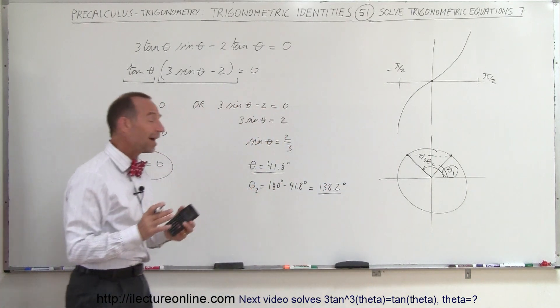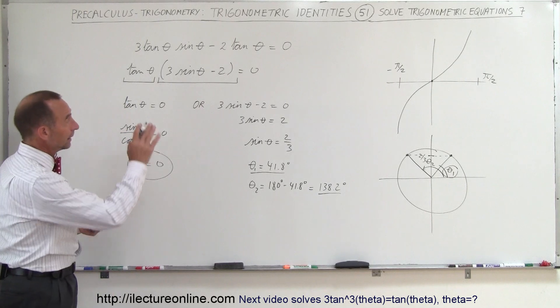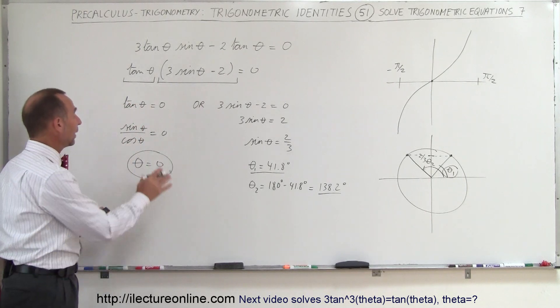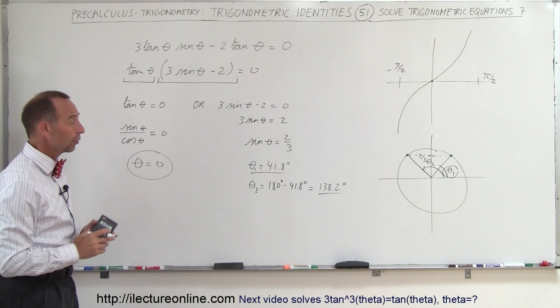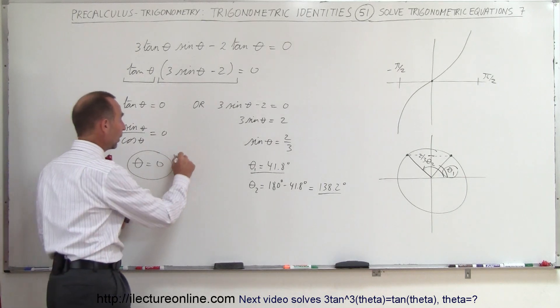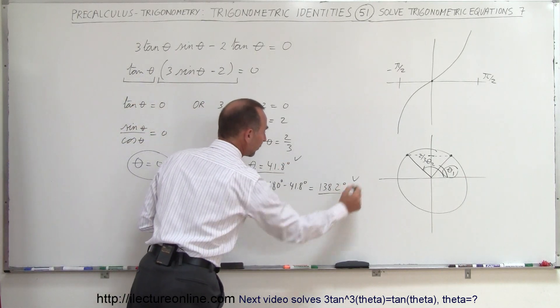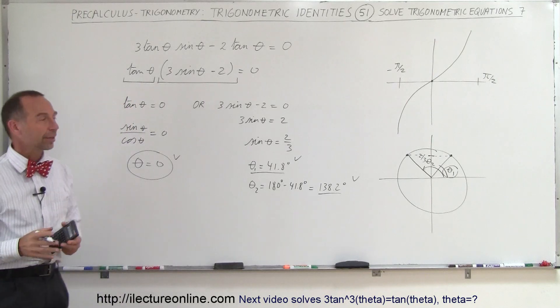So for those two values of theta, the equation will be zero, and also for theta equals zero, the equation will be zero. So there's actually three solutions: one, two, and three all satisfy this particular equation.